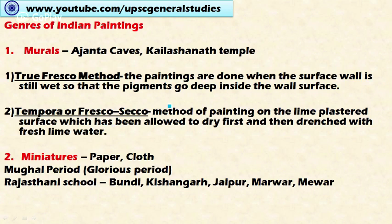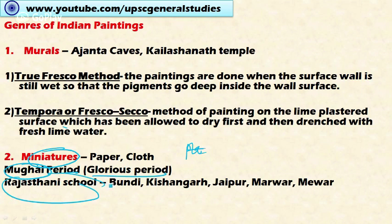The second type is miniatures. Miniature paintings are executed on a very small scale, for example in books or albums of perishable materials like cloth and paper. These miniature paintings were popularized by the Mughal rulers, who represented a glorious period of miniature painting, as well as the Pala rulers. The Rajasthani school of painting also has prominence in miniature paintings, with subgroups including Bundi, Kishangarh, Jaipur, Marwar, and Mewar.